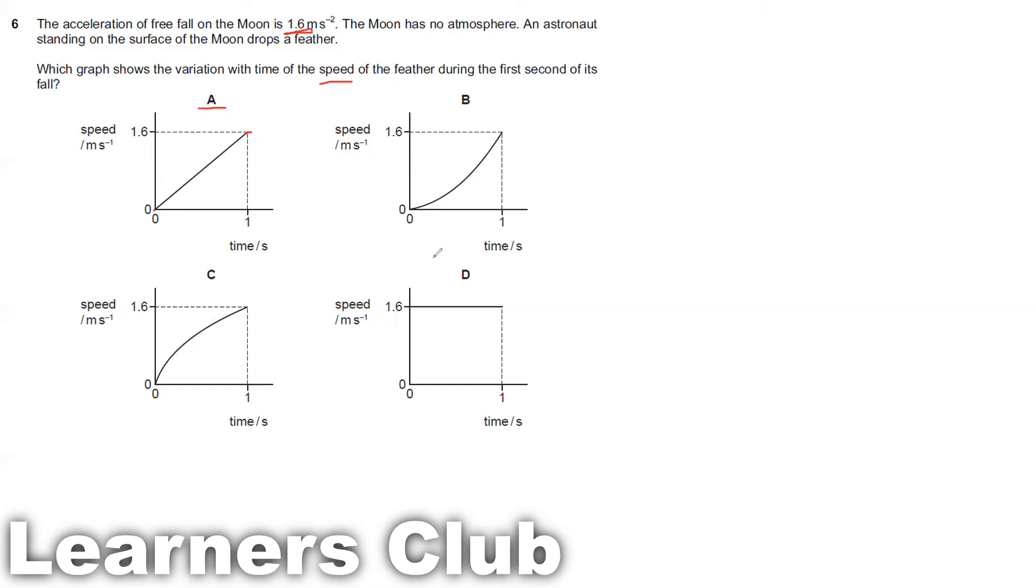Let's check with option B. Option B and C there is a curve that means it's not having a constant acceleration. Option D is a straight line with a constant speed of 1.6 meter per second. So when you have a constant speed the acceleration is zero. So this is completely wrong. They are having variable acceleration. So the option for this question is answer A.